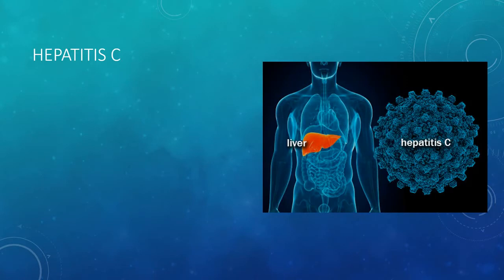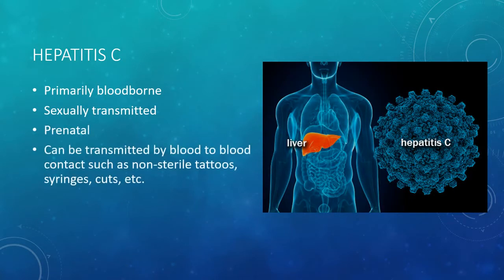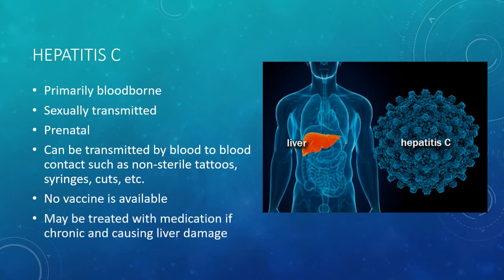Hepatitis C is primarily bloodborne, can be sexually transmitted, prenatal, and can be transmitted by blood-to-blood contact such as non-sterile tattoos, syringes, or cuts. There is no vaccine currently available, but it may be treated with medication if chronic and causing liver damage.